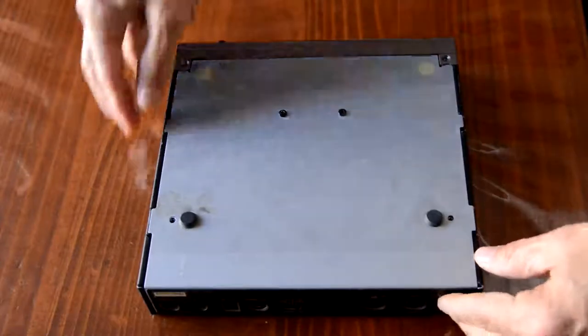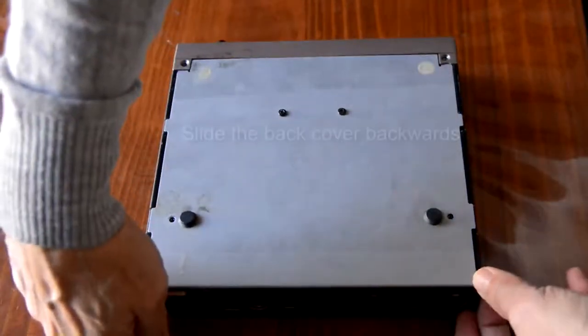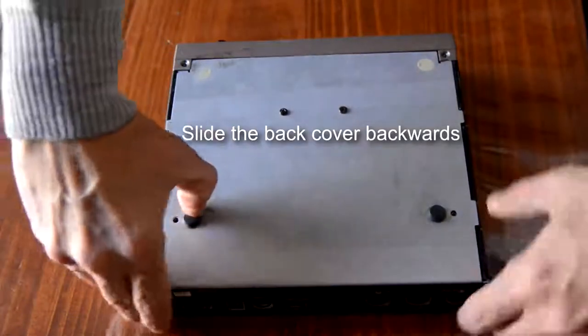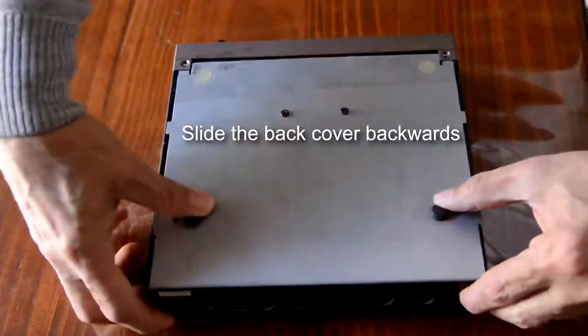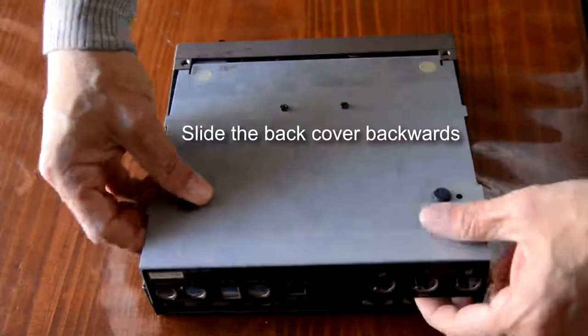Now the back cover should slide backward. Put a tiny bit of pressure on it and slide it backward, and it should come out easily.